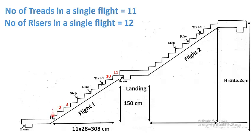We have designed good stairs by following the standard size of riser and thread and the correct proportions. The result is 11 threads and 12 risers in each single flight, with 22 total risers and 21 total threads across both flights.